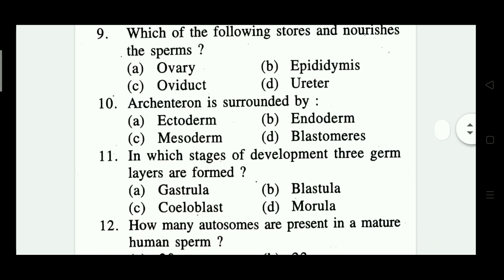Question number ten: archenteron is surrounded by what? Options: ectoderm, endoderm, mesoderm, blastomere. Which one is correct? Option B — endoderm is correct.